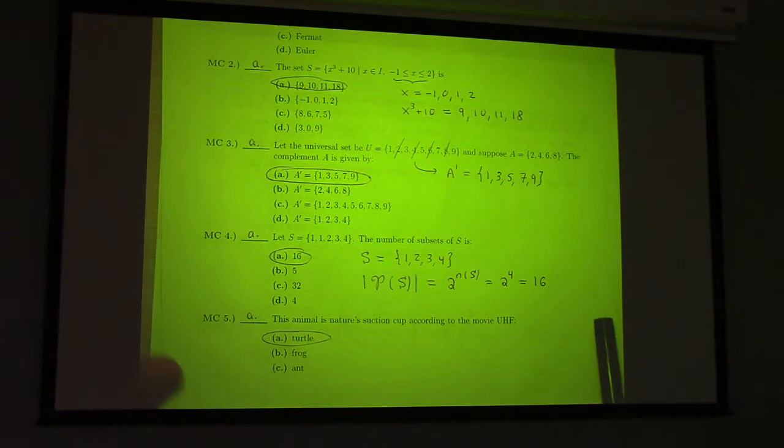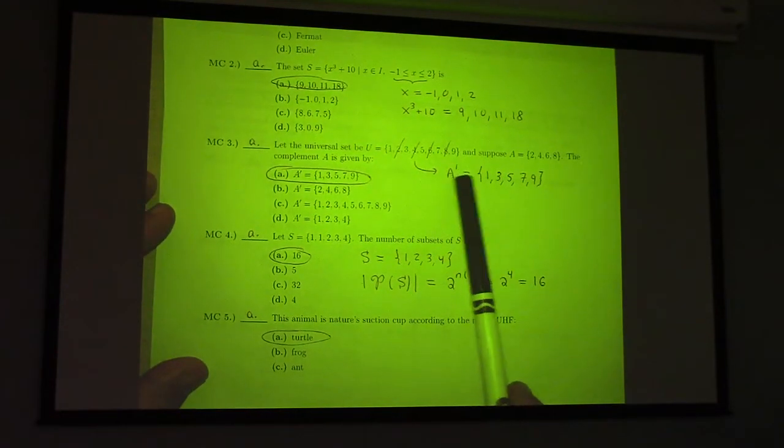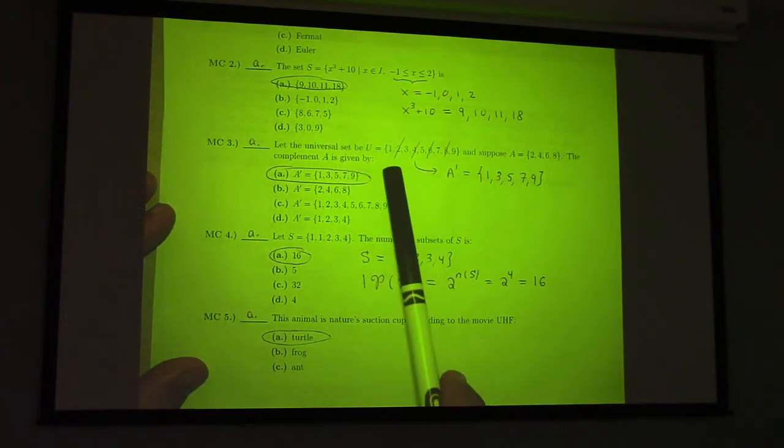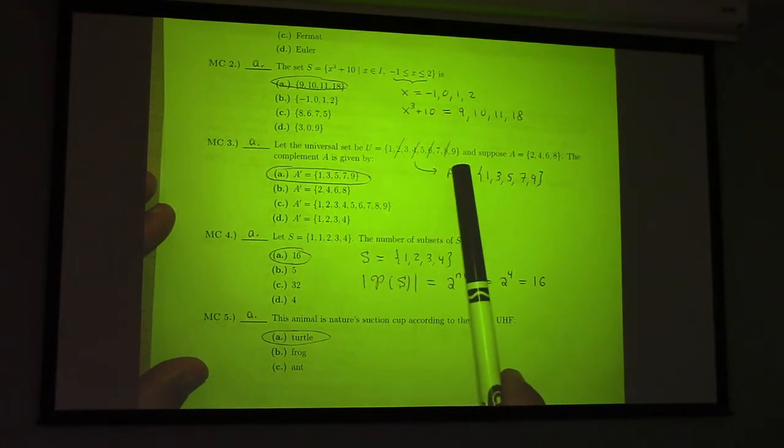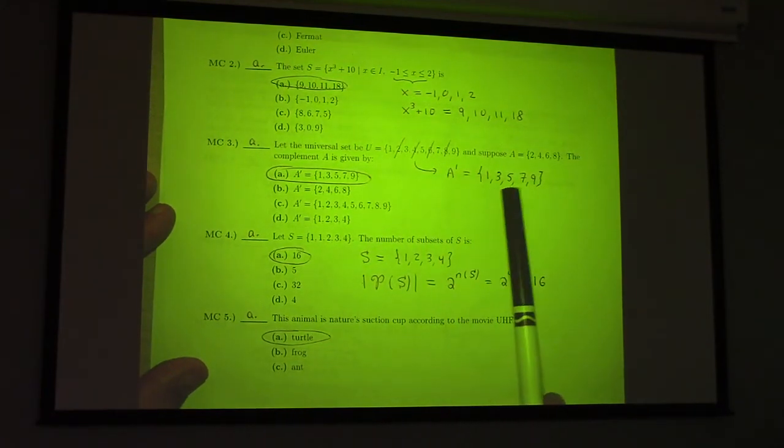Here's an idea. To solve this kind of problem on the test, one way you can do it is take the universal set and cross out the ones that are in the set you're complementing. What you're left with is 1, 3, 5, 7, and 9.